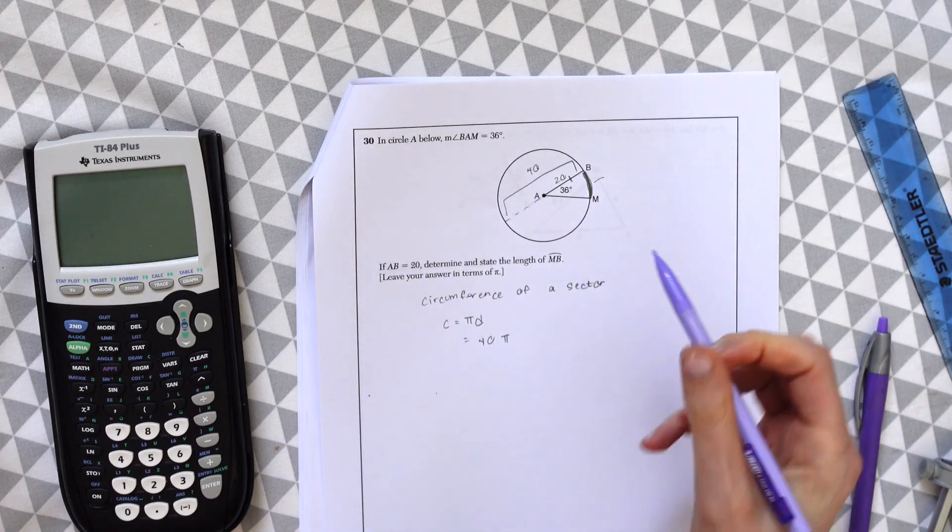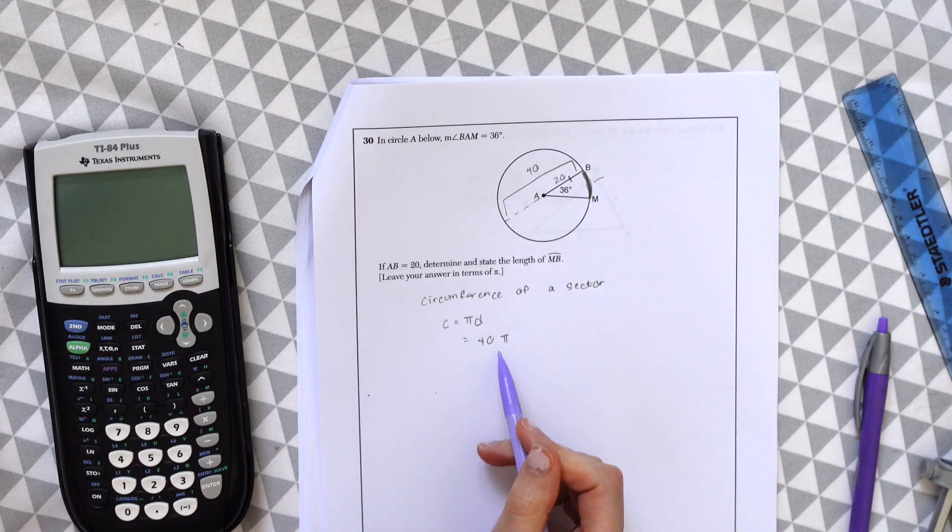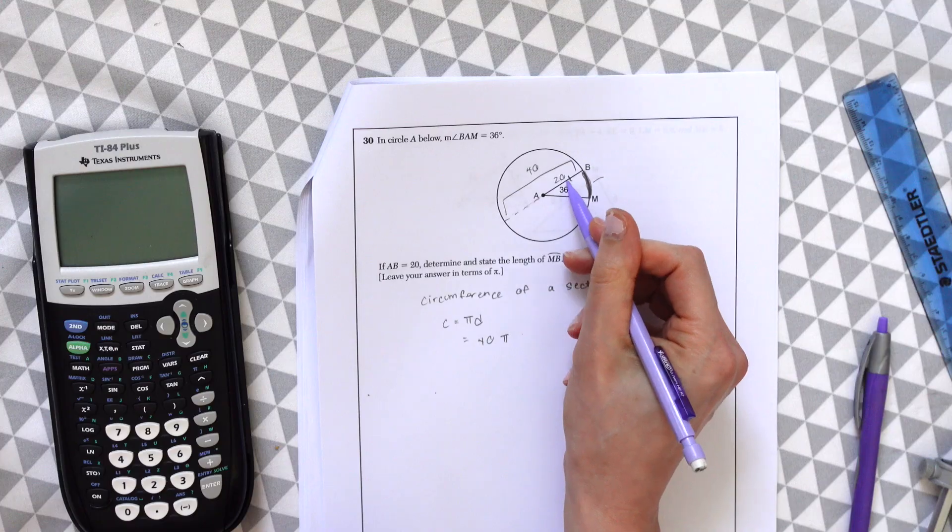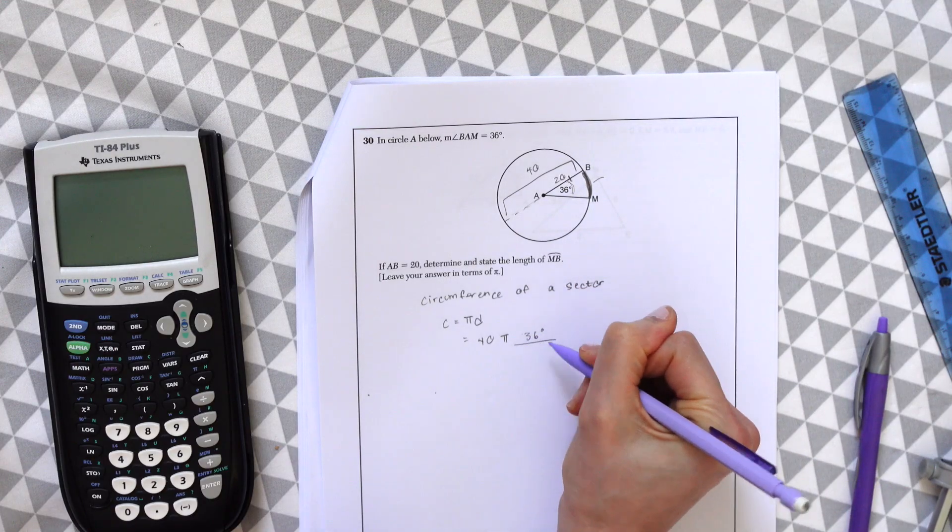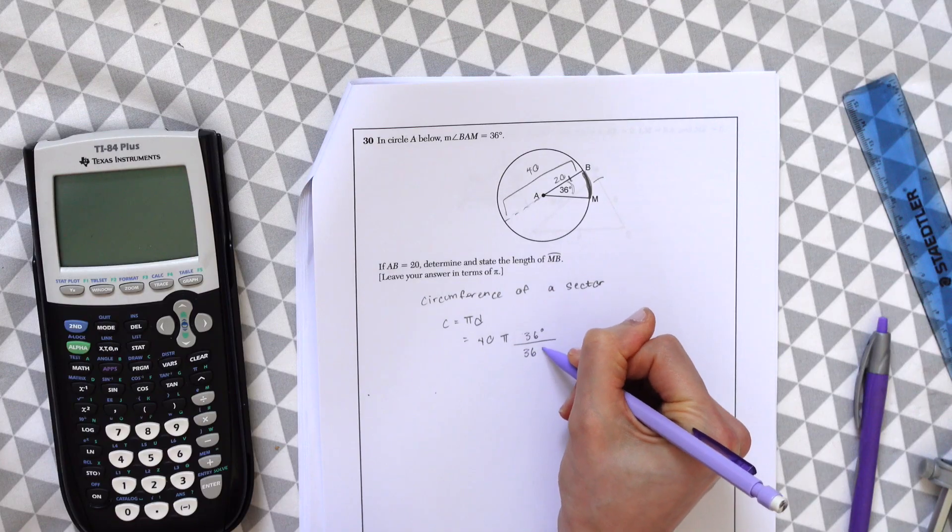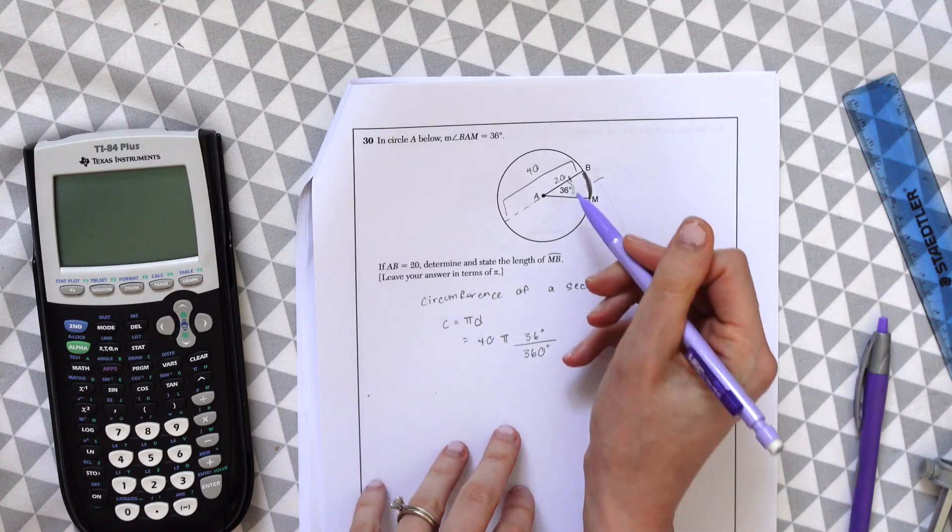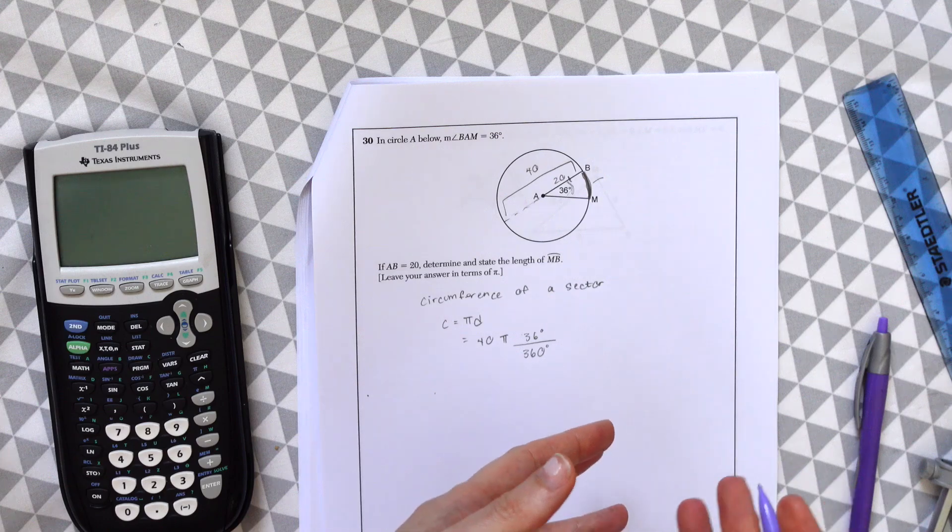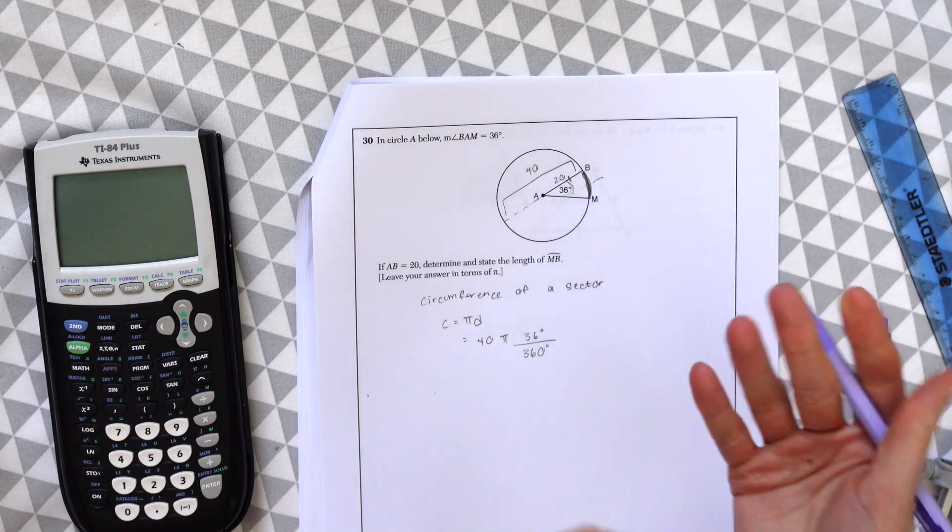But we're not finding the whole circumference. We're just going to, we're just trying to find this part. So to do that, we have 40 times pi. And then what we're going to do is take the angle measure that they gave us of this small piece of pi, 36, and then divide it by the whole. Kind of making a fraction, the whole part of the circle. It's 36 degrees that we're trying to find out of the whole circle, 360 degrees. So we just make a little fraction of what they're looking for, the small slice over the whole.